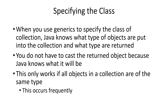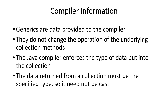You don't have to cast objects returned when you specify the generic because Java knows what it will be. Of course, this only works for collections that are all the same type — you can't mix object types like you can when using the class Object. On the other hand, generally most of the time when you create a collection of objects, they are almost always the same type. Generics are implemented in the compiler and don't really change the operation of the underlying methods. Java enforces the type of data you put into the collection: if you say this is an ArrayList of Widgets, you can only put Widgets in, and only Widgets can come out.